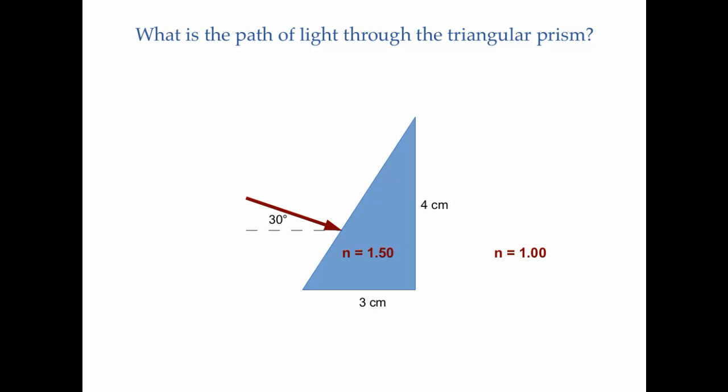It has an index of refraction of 1.5, and it's immersed in air with an index of 1. You can see a red arrow, which represents a light ray incident on the left face of the prism, and it's at 30 degrees with respect to the horizontal.